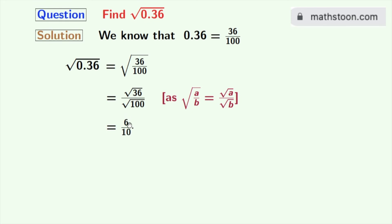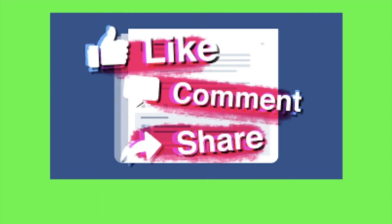Now if we express this fraction as a decimal number we get 0.6. So finally we get square root of 0.36 is equal to 0.6, and this is our final answer. Thank you for watching.